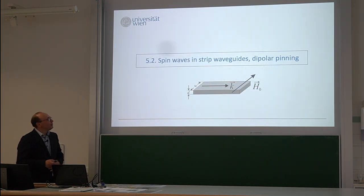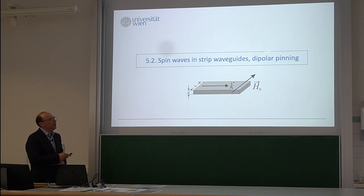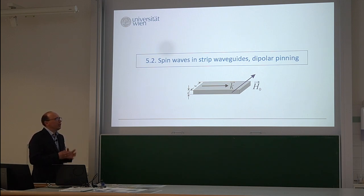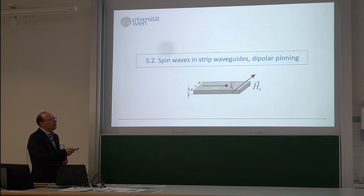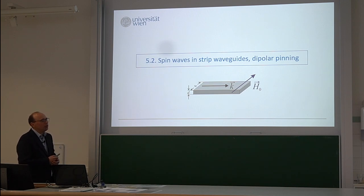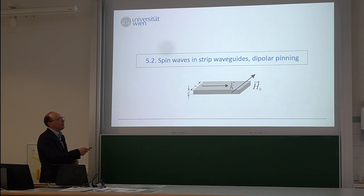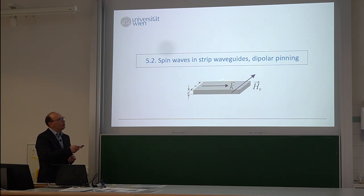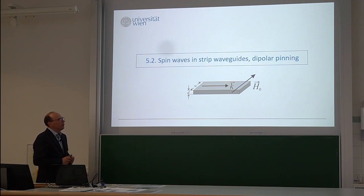We now continue with spin waves in strip waveguides and discuss so-called dipolar pinning phenomena. As mentioned at the beginning, spin waves don't propagate in air — we send them in a waveguide with thickness d (or L) and width w, with k oriented along the propagation direction. If you have quantization over thickness or width, you need to take into account all three k-vectors, but the most important is the one along the waveguide, since it carries information. We need to magnetize our waveguide in one of the directions.